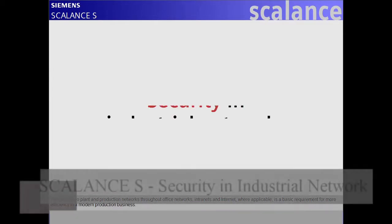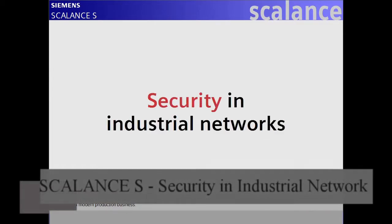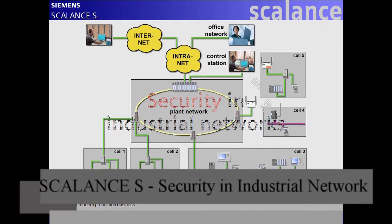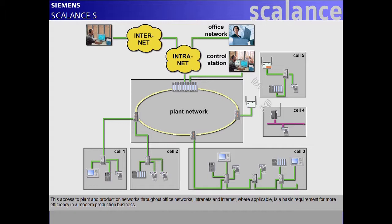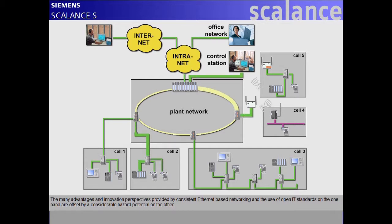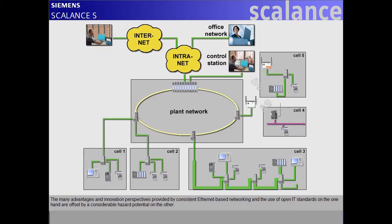Access to plant and production networks throughout office networks, intranets and internet, where applicable, is a basic requirement for more efficiency in a modern production business. The many advantages and innovation perspectives provided by consistent Ethernet-based networking and the use of open IT standards on the one hand are offset by a considerable hazard potential on the other.